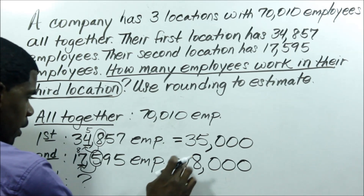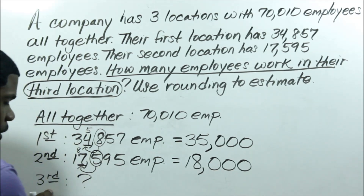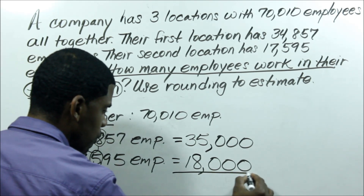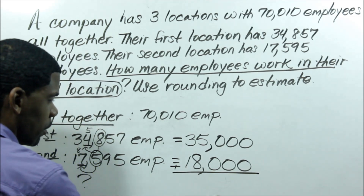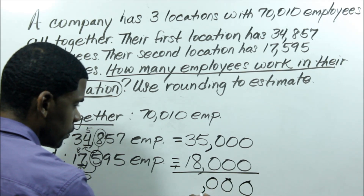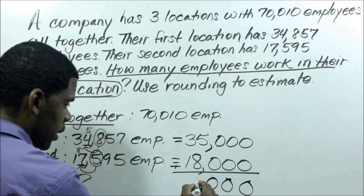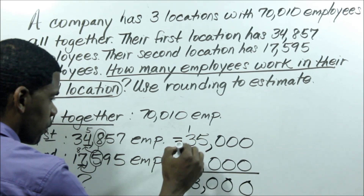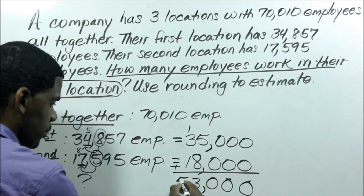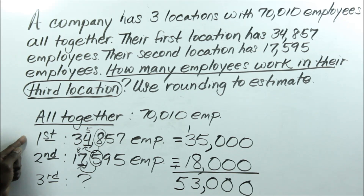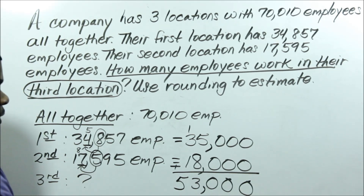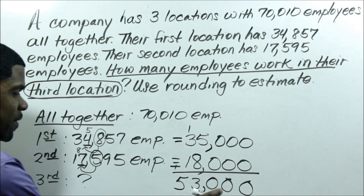Now I have the rounded values for my first and second locations. Remember, I don't know anything about my third location. So I'll add the two rounded numbers: 35,000 plus 18,000. Five plus eight is 13, carry the one. One plus three is four, plus one is five. The total for the first and second locations is 53,000 employees.